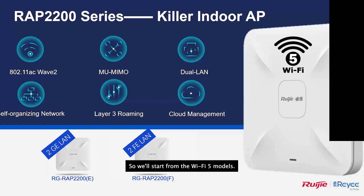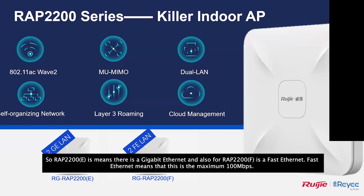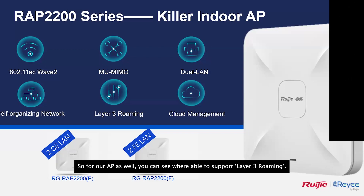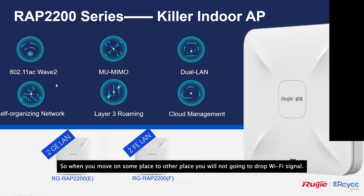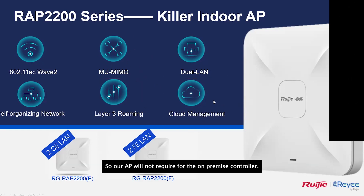Starting with the Wi-Fi 5 models: the IP2200E has a gigabit Ethernet port, and the IP2200F has a Fast Ethernet port with a maximum of 100 Mbps. Our APs support seamless roaming — when you move from one place to another the Wi-Fi signal won't drop. They also support MU-MIMO (Multiple Input Multiple Output) for faster and more efficient network connections, and cloud management without an on-premise controller.